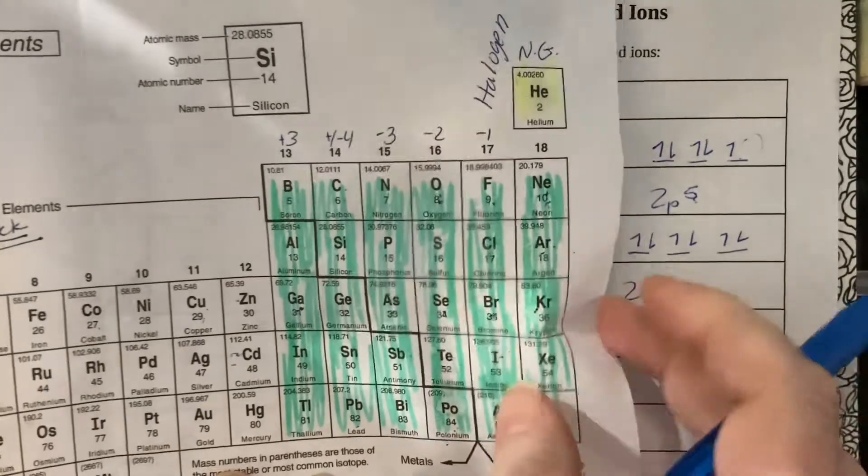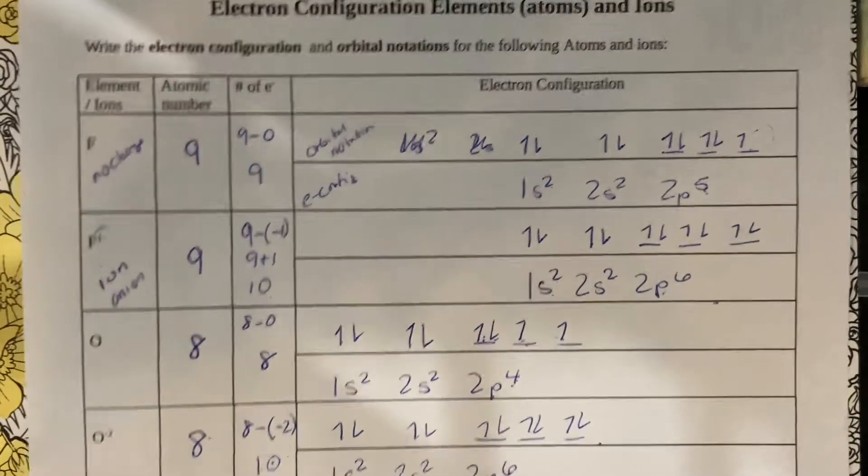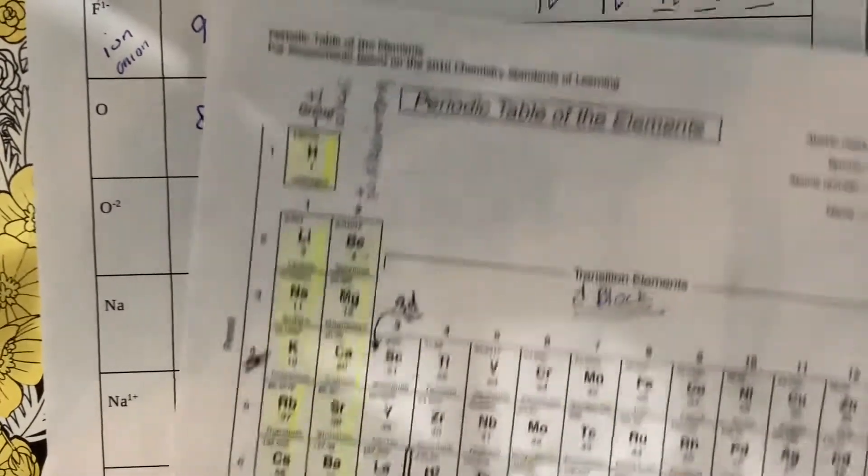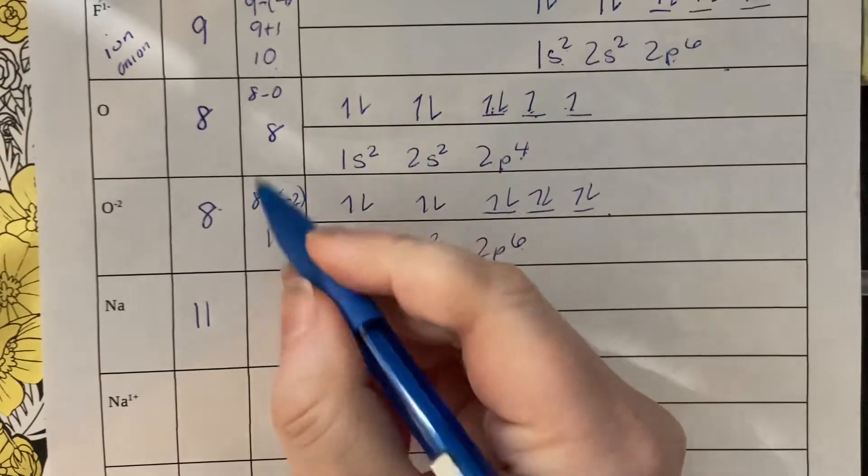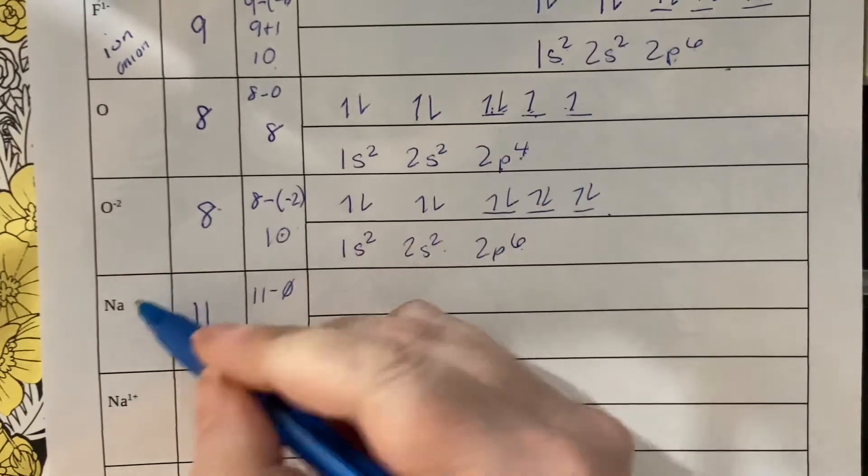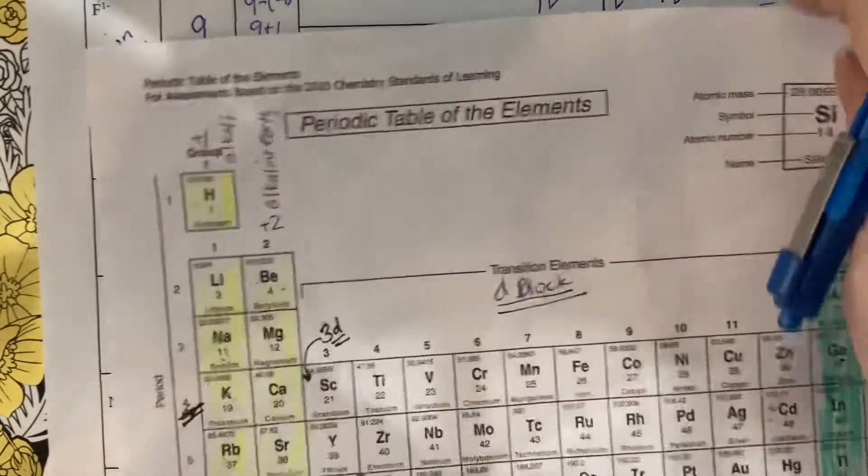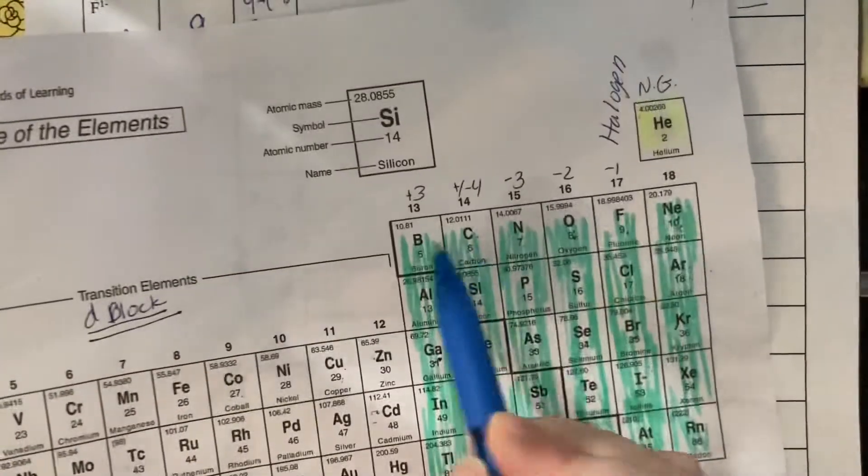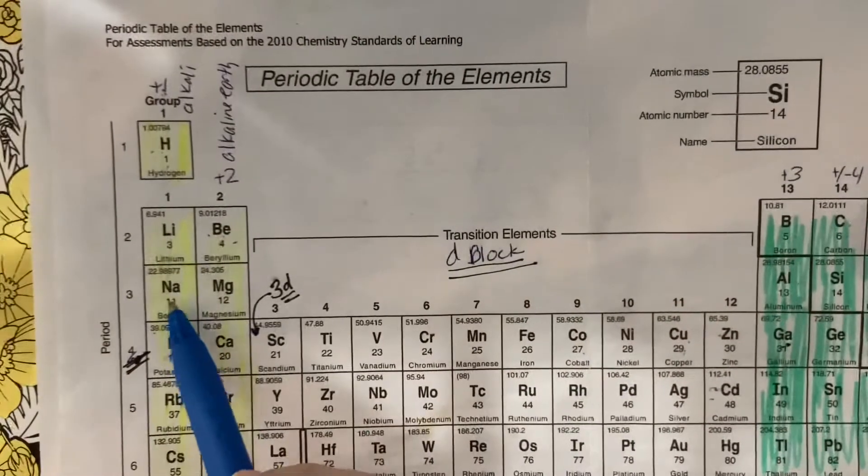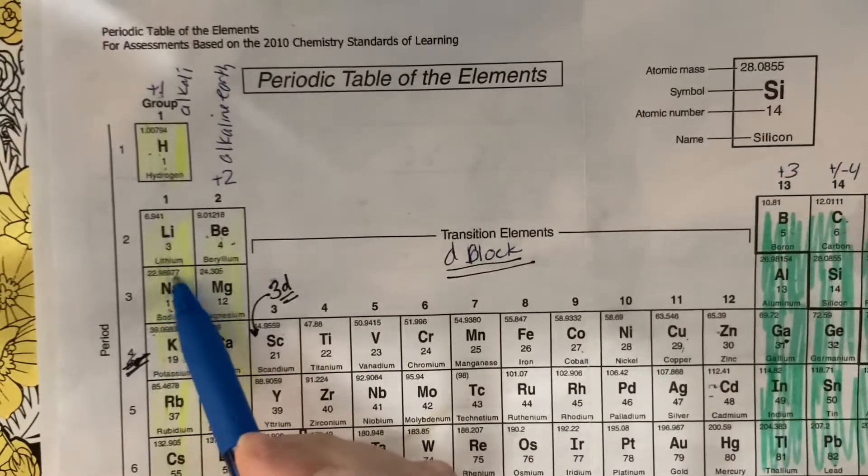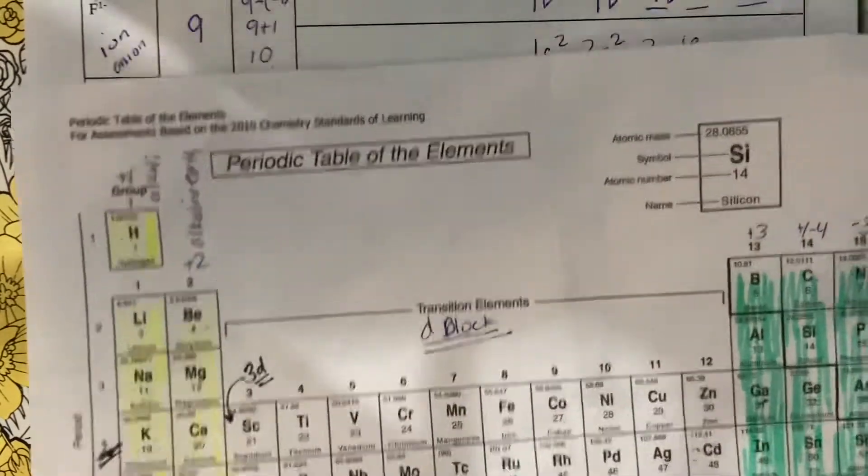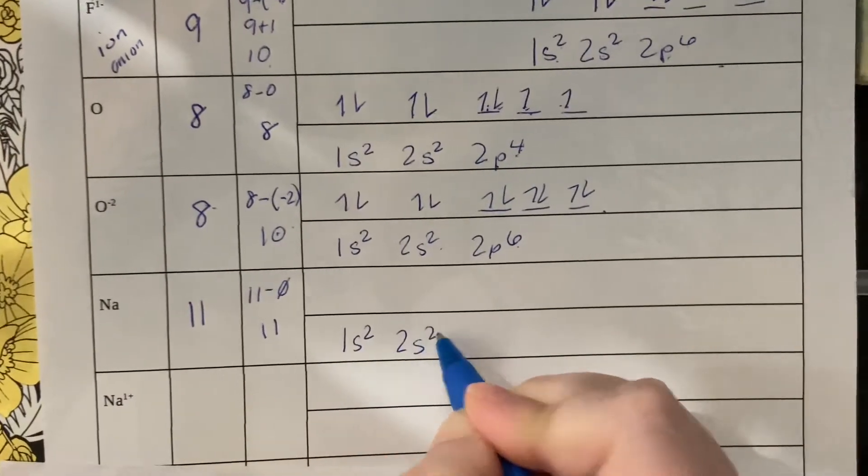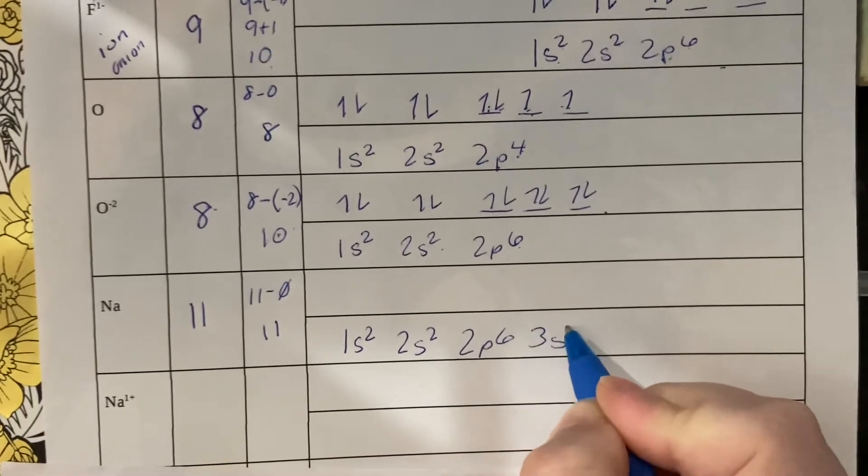Alright, now we'll go over to sodium. Sodium's over here, he's number 11. Electrons: eleven minus zero because this is the atom. And his electron configuration: 1s² 2s² 2p⁶ 3s¹. We stop at the one because we're only going to the first s of row three.